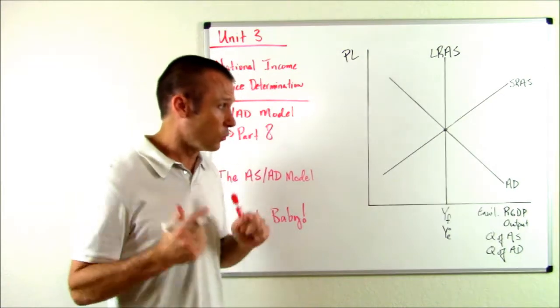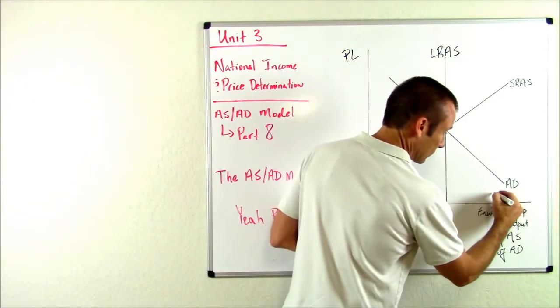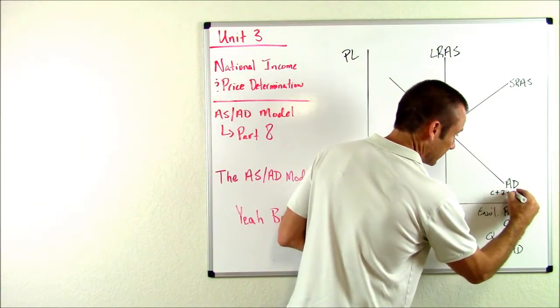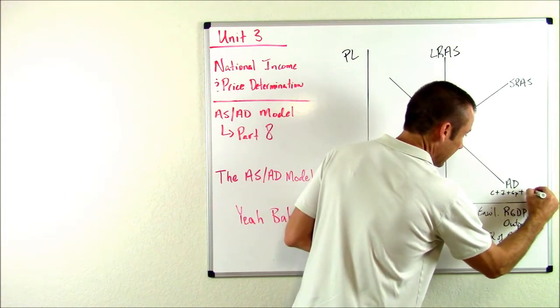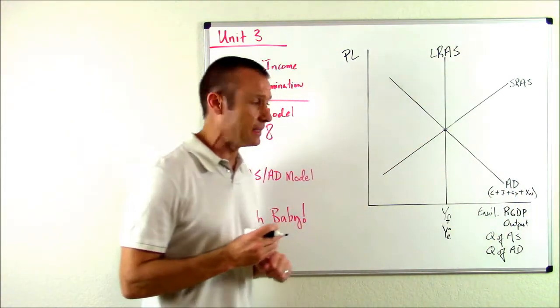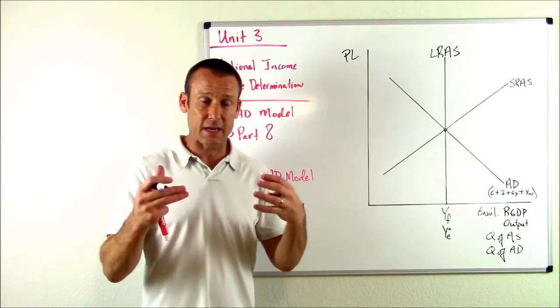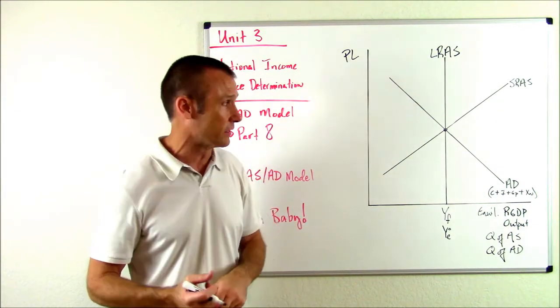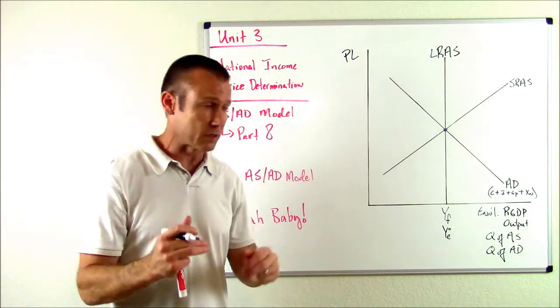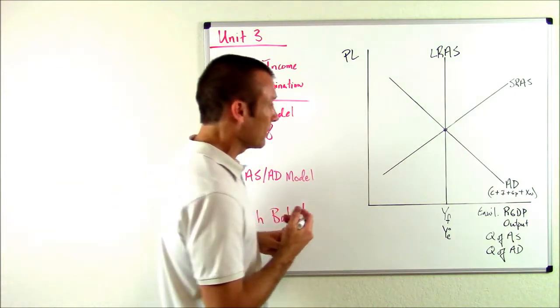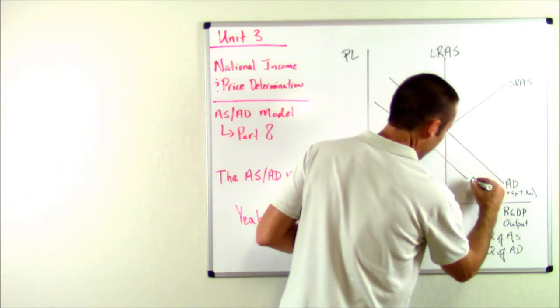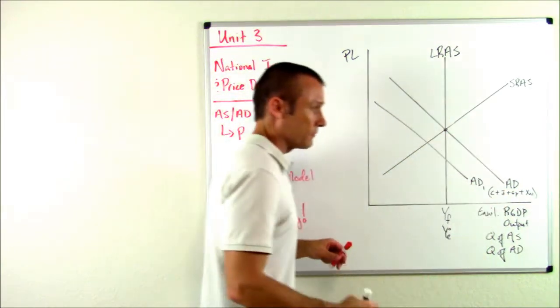So what are households going to do when they feel less wealthy? They're going to cut back on their spending. We know that AD equals C plus I plus G plus XN. So if C, if consumption starts to decrease, that's household spending starts to decrease because of the drop in the stock market, AD is going to shift to the left.